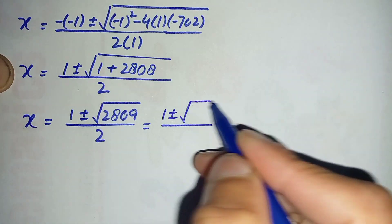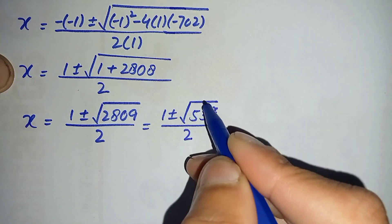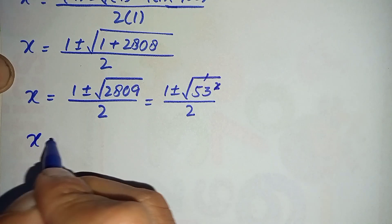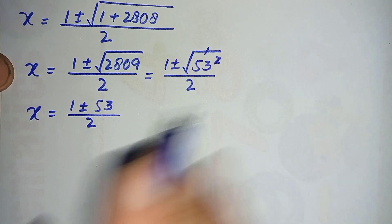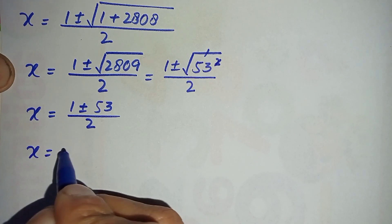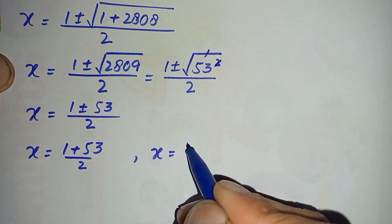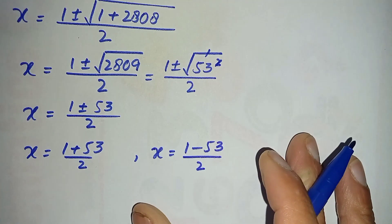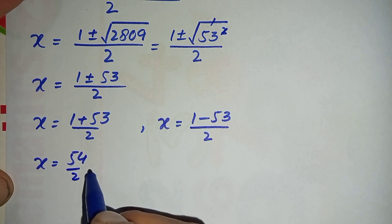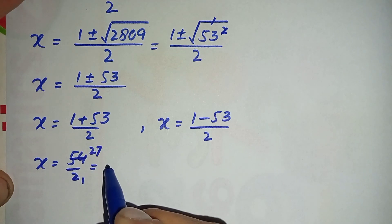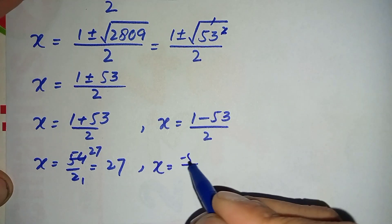Now we can write the number inside the square root: 2809 can also be written as 53 squared. So the square and square root cancel, leaving only 53. It becomes x equals 1 plus or minus 53, divided by 2. There are two values of x: one is x equals 1 plus 53 divided by 2, and the other is x equals 1 minus 53 divided by 2. Simplifying: x equals 54 divided by 2, which equals 27, and x equals minus 52 divided by 2, which equals minus 26.